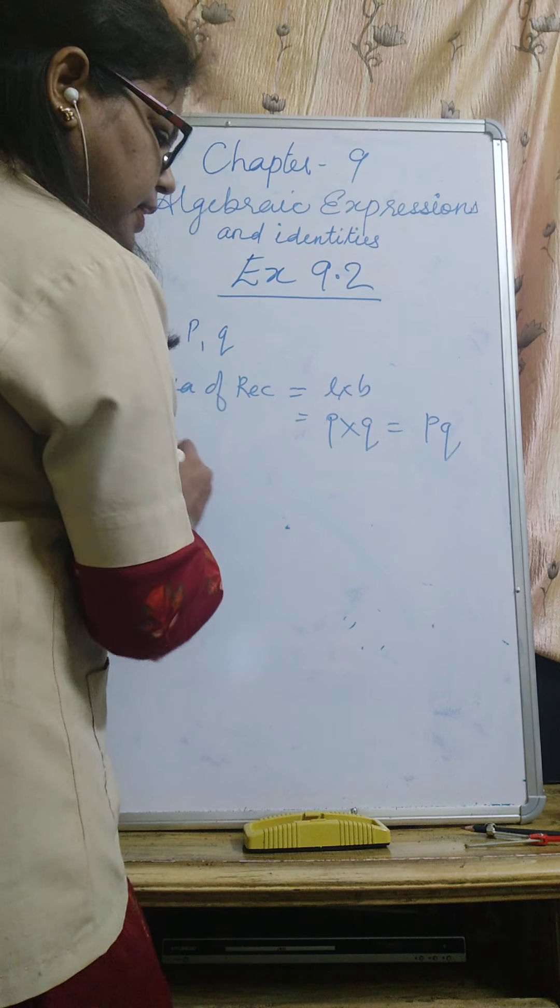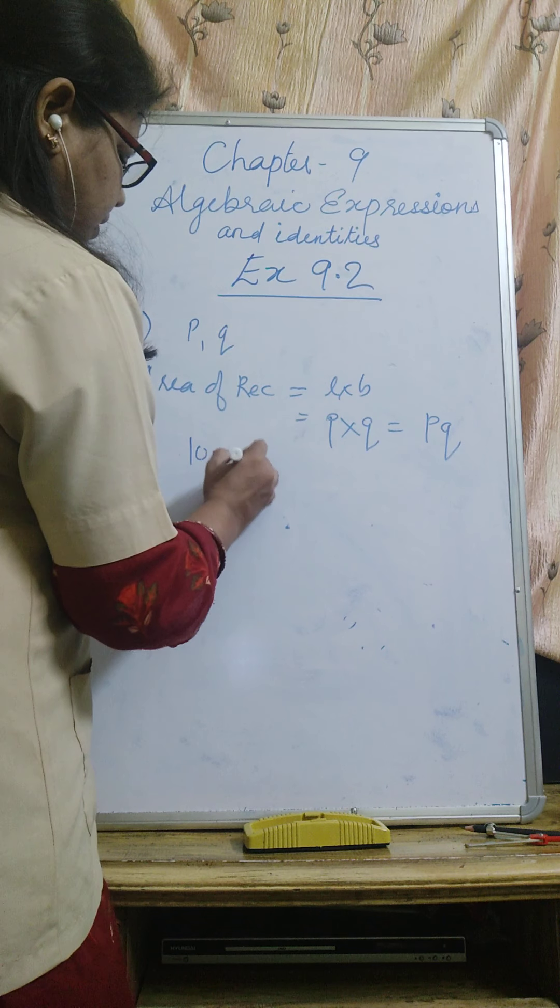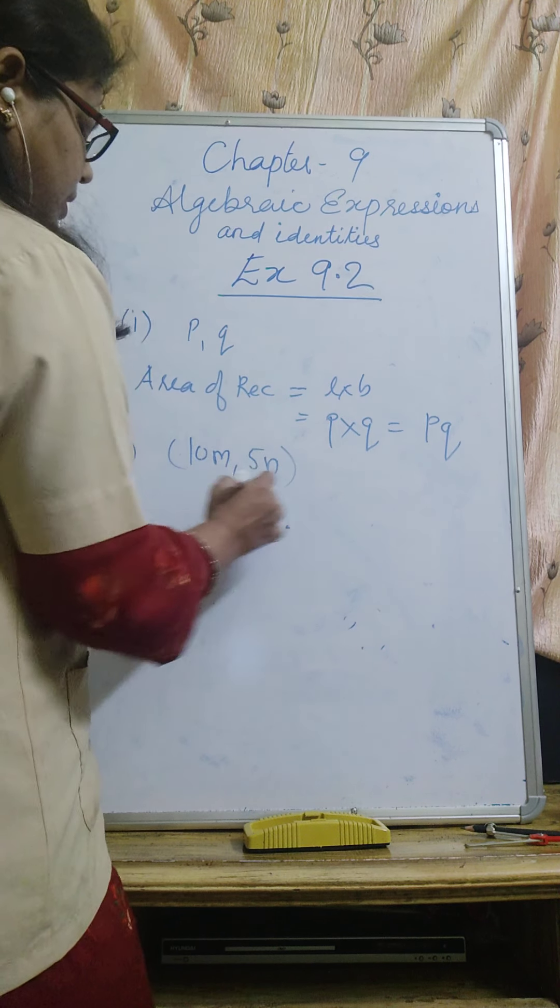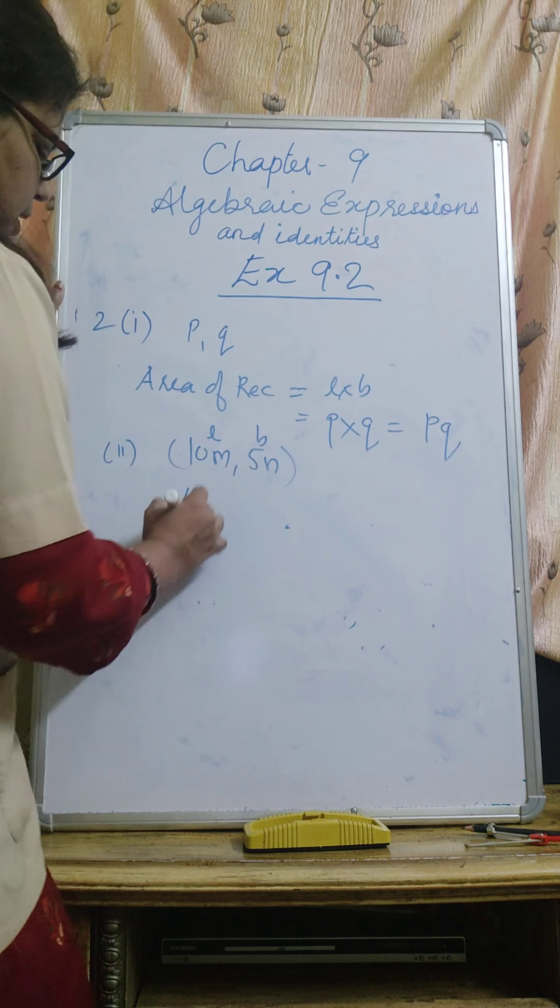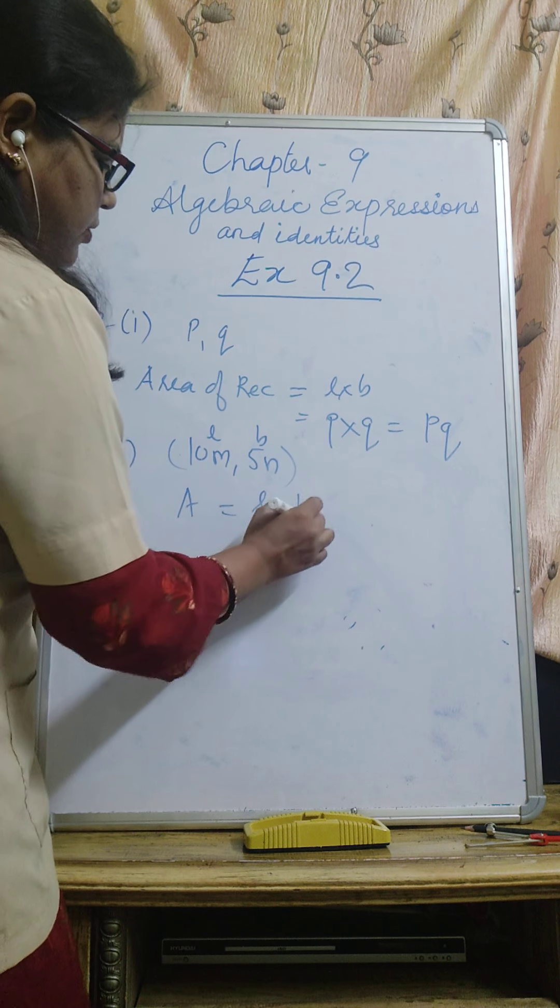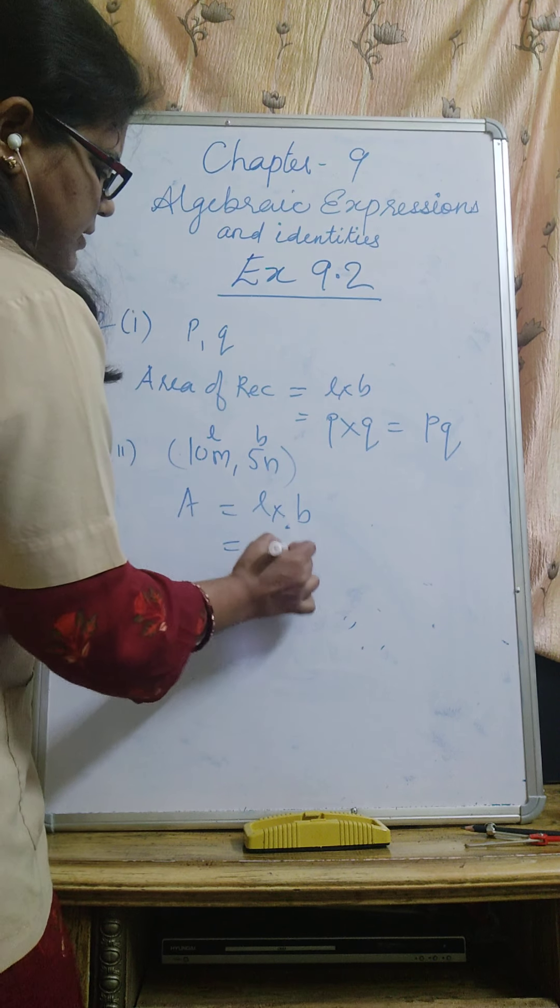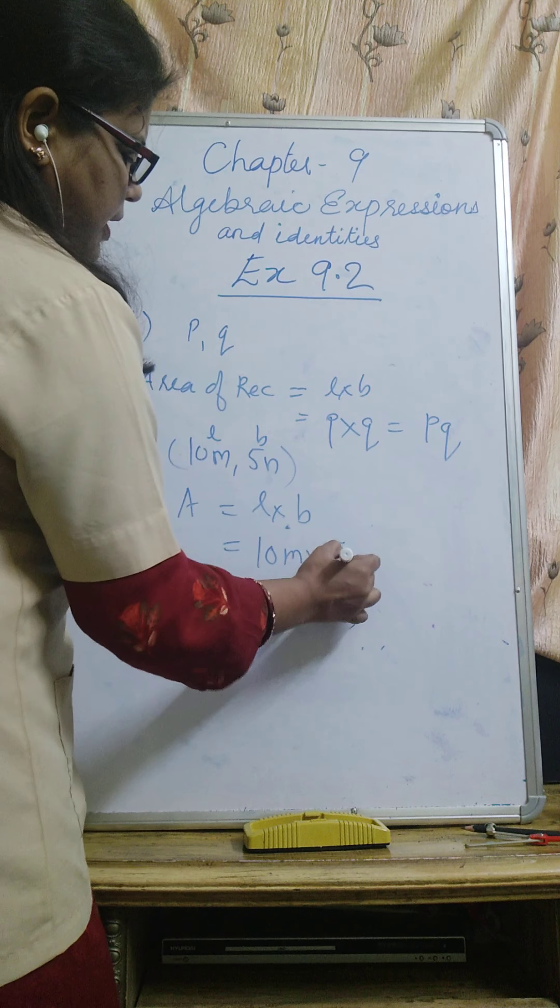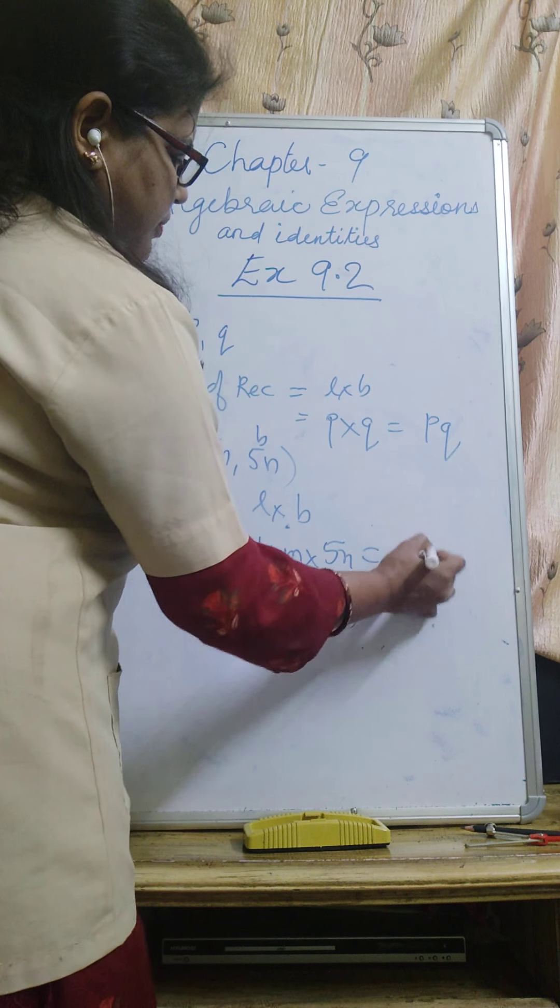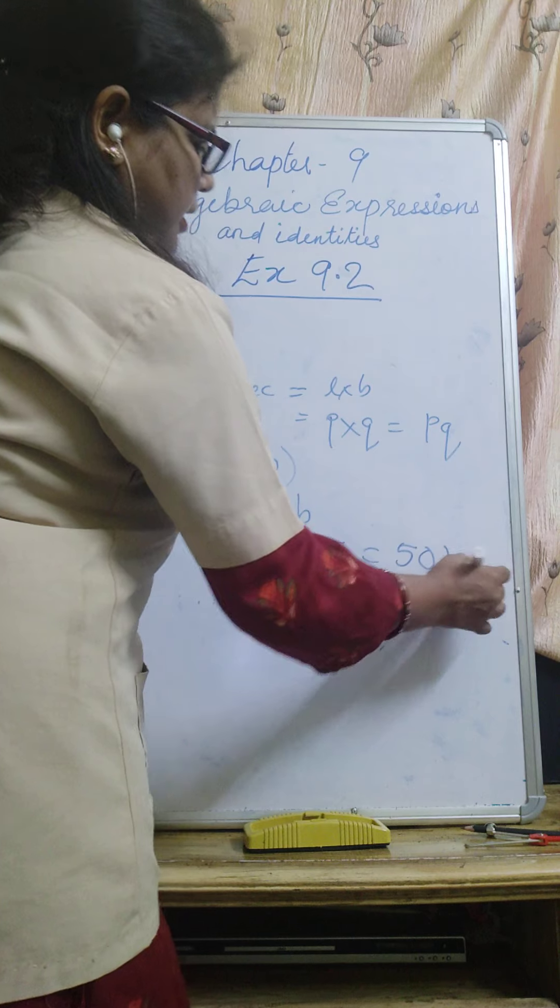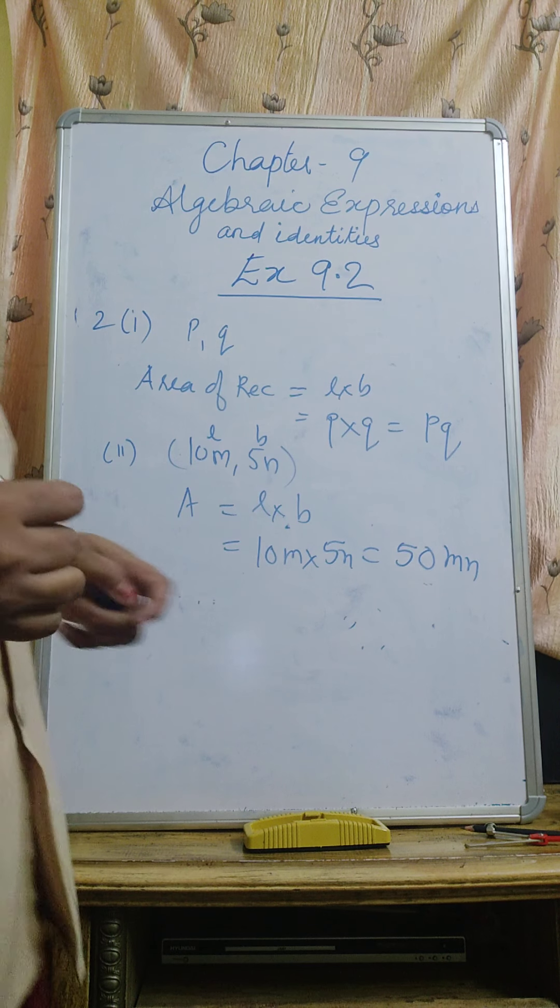Second one is given 10M and 5N. 10M is length, 5N is breadth. Area equals L into B. L is 10M, B is 5N, so 10 times 5 is 50, M into N is MN. This is the second question.